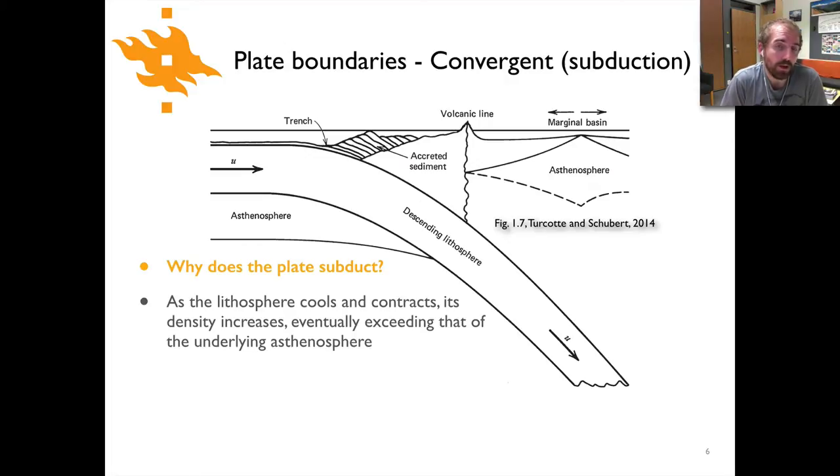We know that as the oceanic lithosphere moves away from a spreading center, it's going to cool down, and it's going to contract. And when it contracts, the density of the material is going to increase. The density of the lithosphere is going to get higher. And eventually the density of the lithosphere will get high enough that it's actually more dense than the underlying asthenosphere.